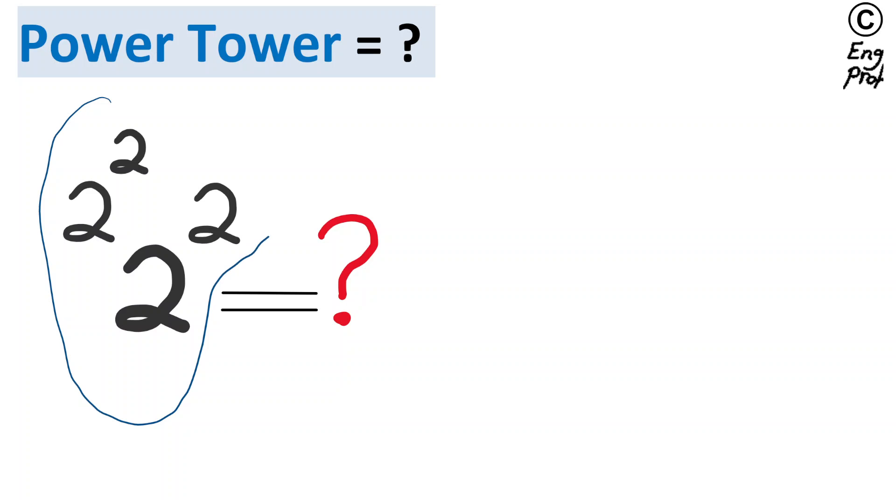What is the result of this power tower combined with exponentiation that is shown here? To compute this quickly, we need to recognize that there is a left exponent here.